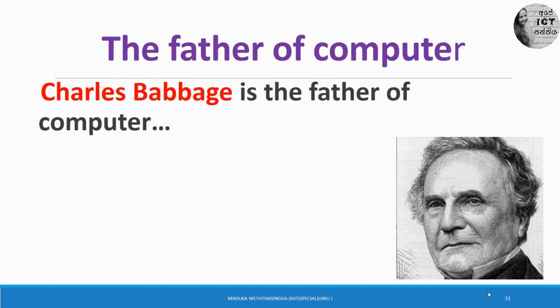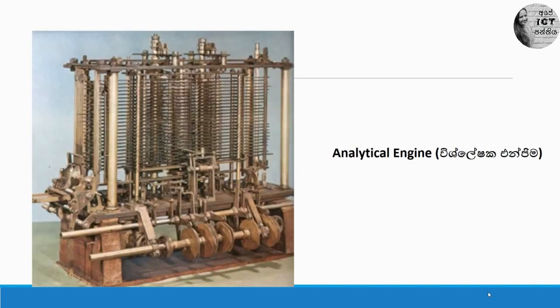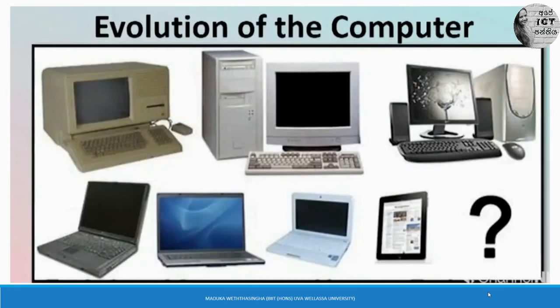I'll show you what these two machines are. The first one is the Difference Engine — you can see the Difference Engine now. Then the Analytical Engine — now you can see the picture of the Analytical Engine. There is a kind of machine, but we can't identify it as a computer like the ones you have seen these days.